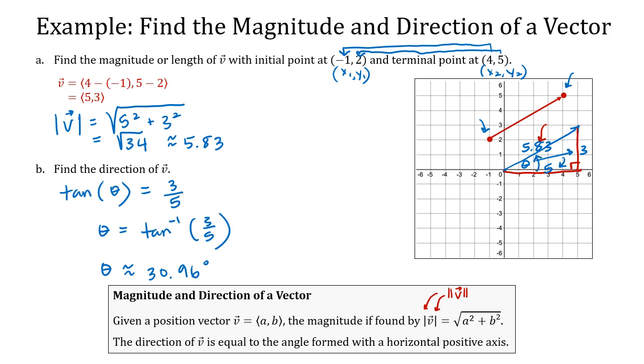So, we now have the ability to not only write the vector as a position vector, but we also have the ability using that position vector to find the length or the magnitude of the vector and then also find the direction of the vector.